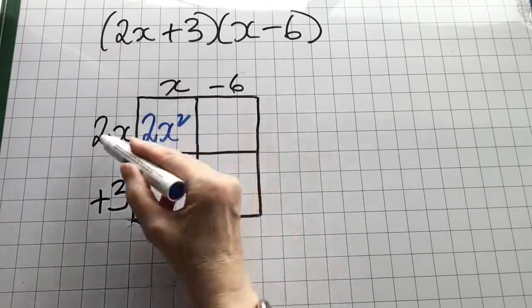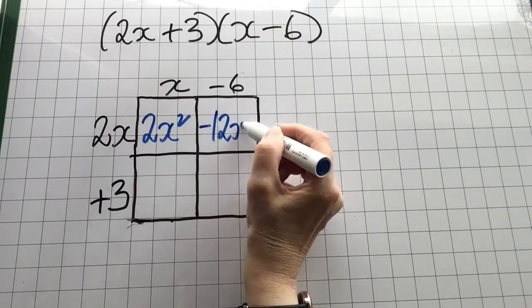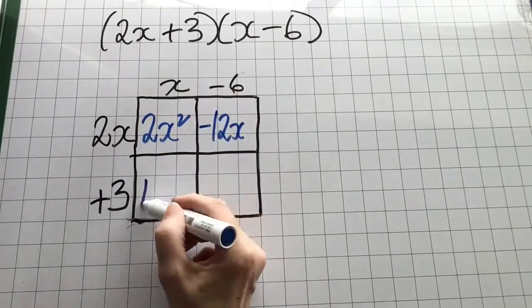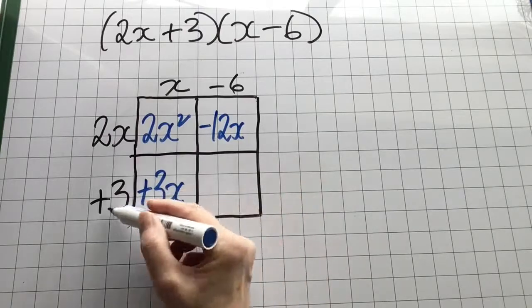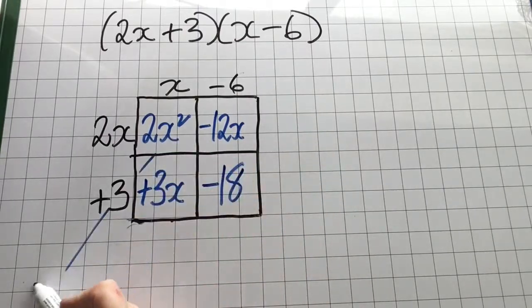So 2x by x is 2x squared. 2x by minus 6 is minus 12x, 3 by x is 3x, and 3 by minus 6 is minus 18.